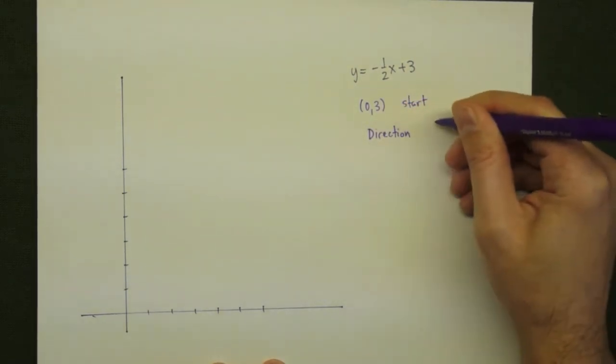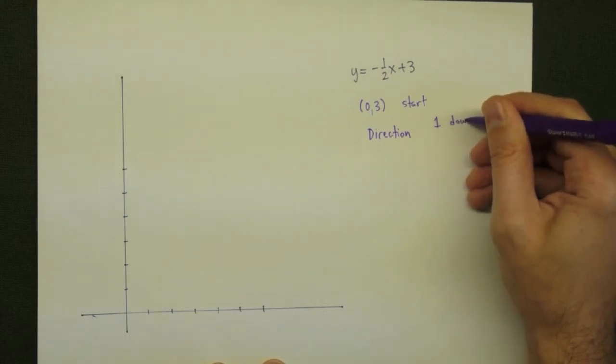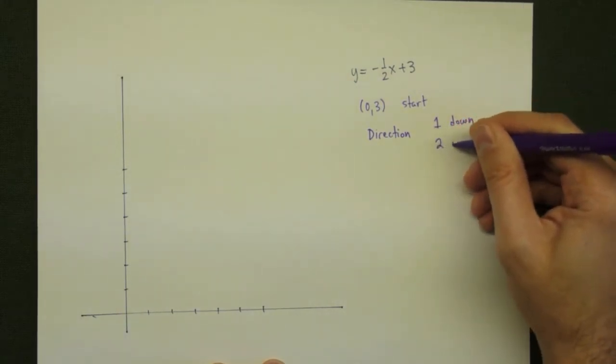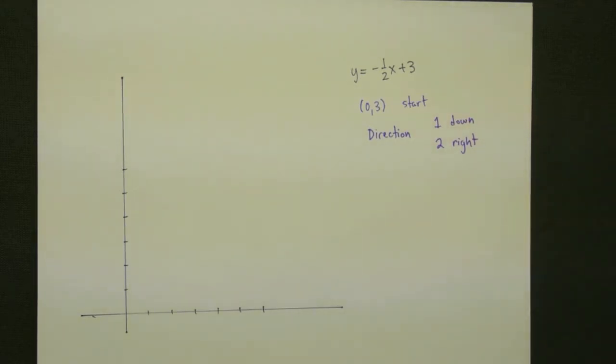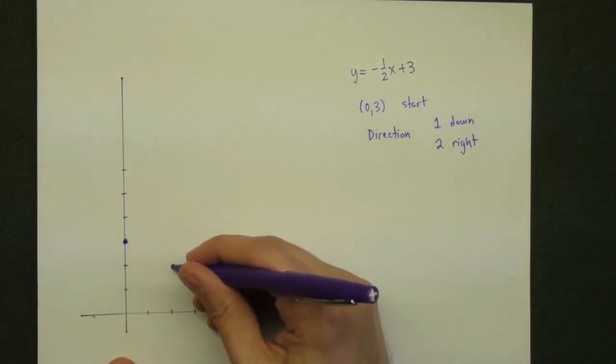Then the direction will be given by the fraction of the slope. It will be negative 1 or 1 down for every 2 that it moves to the right. So, we start with the point 0,3, that's this point right here, and we find a second point by moving 1 down and 2 over to the right.